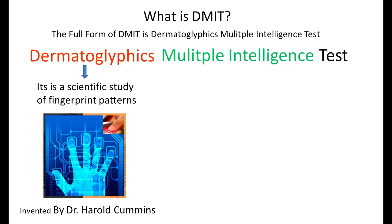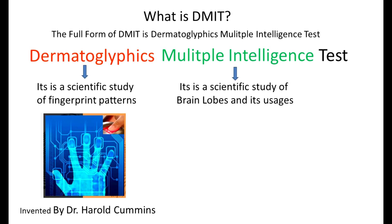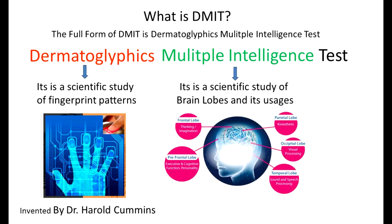What is Multiple Intelligence Test? It is a scientific study of brain lobes and their usages. As we know, we have five brain lobes, which are the main lobes we study while doing multiple intelligence.